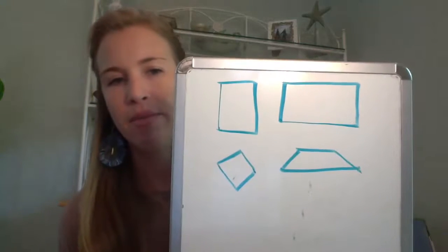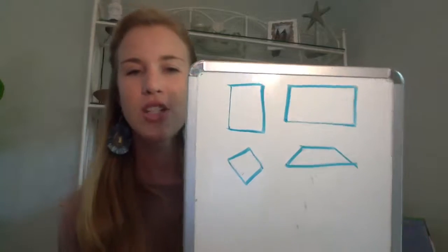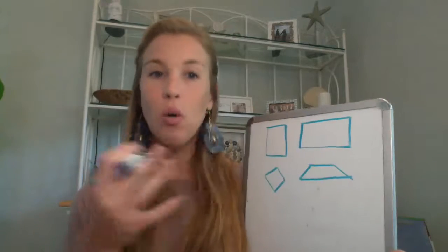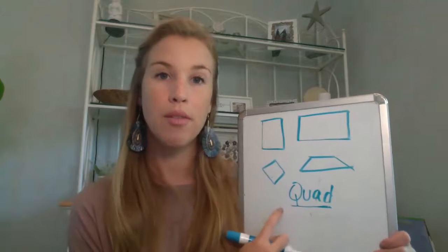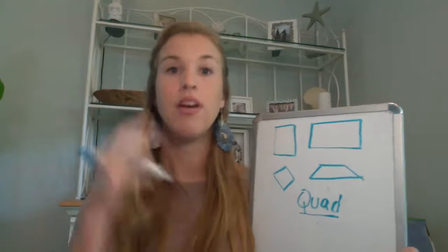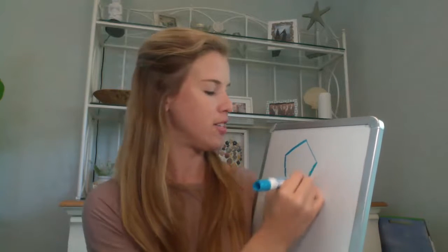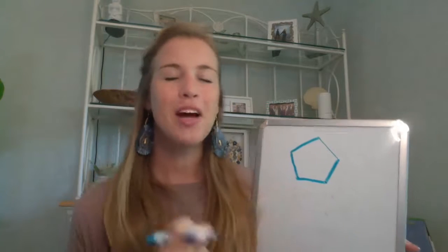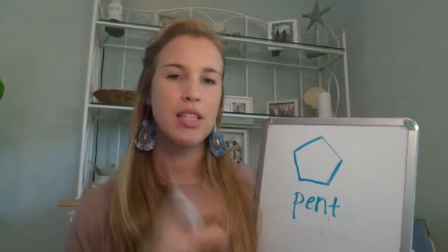Take a look at these four shapes. What do they all have in common? Each of these have four sides — that's what quad means. The prefix of quadrilateral is 'quad' and quad means four. So quadrilaterals have four sides — that's why all of these are grouped together. After the quadrilateral, we talked about a pentagon. Pentagon starts with the prefix 'pent' and pent means five.